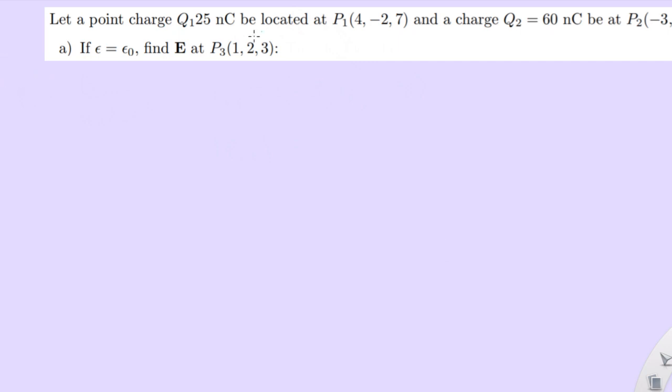So first we could start by grabbing the vectors and the distances between the two points. We need a vector between these two points and a vector between p2 and p3 as well, p1 and p3 and p2 and p3. So we'll do p1 and p3 first, call it p13.